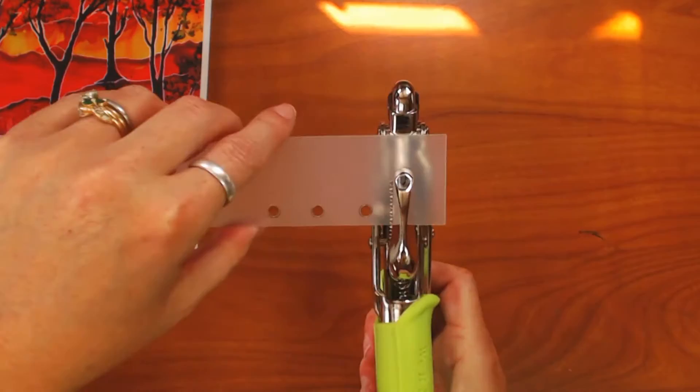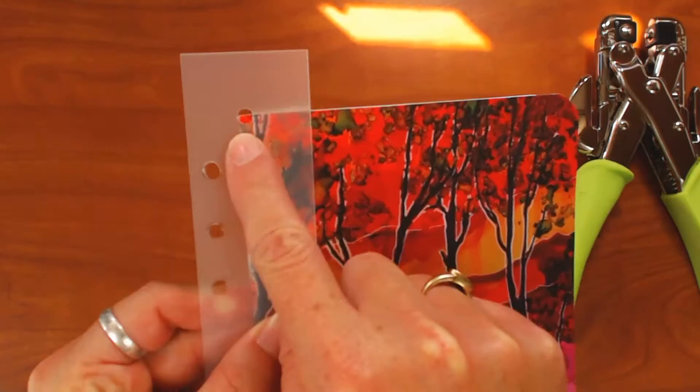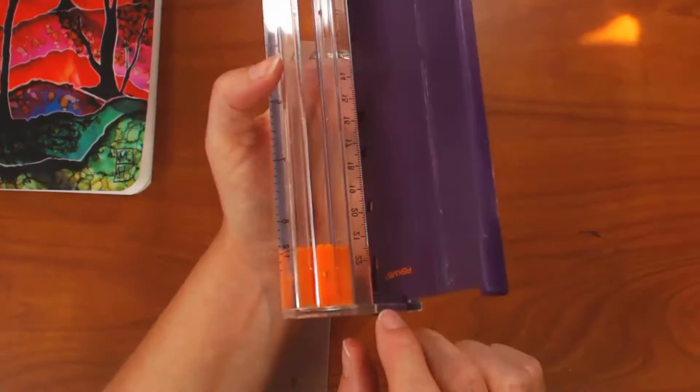I take my crop-a-dial and I punch the holes right just a little bit beyond those markings. So the holes are just a little bit above and beneath the edges of the insert that I'm using.